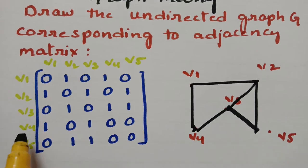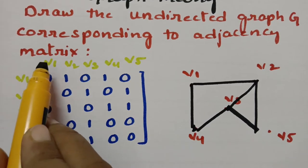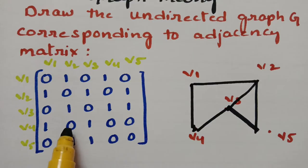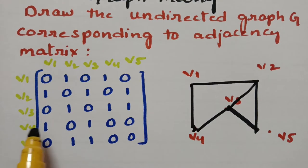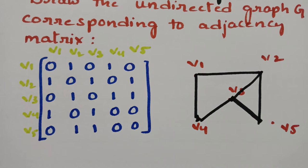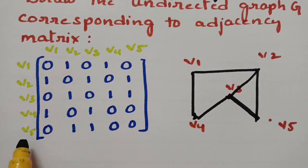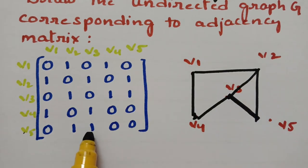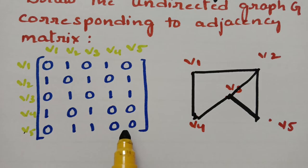Coming to v4: v4 makes an edge with v1, already done. V4 to v2: 0. V4 to v3: there is already 1 edge. V4 to v5: 0. Coming to v5 — v5 to v1: 0, no edge. V5 to v2: 1 edge. V5 to v3: 1 edge. V4 to v5: 0.